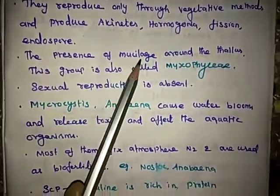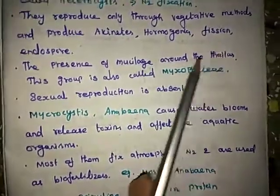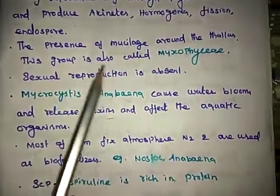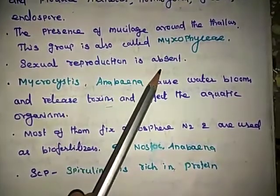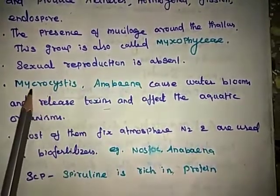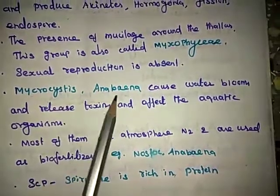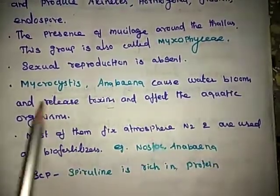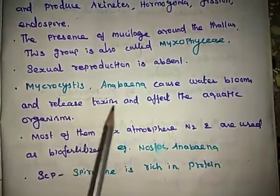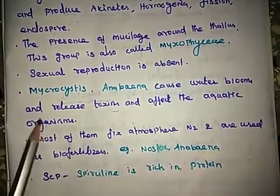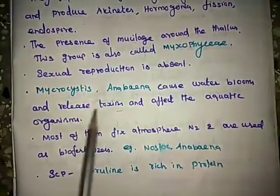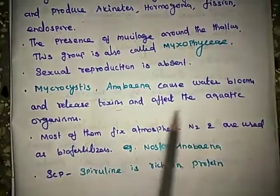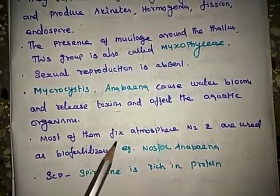The presence of mucilage around the thallus means this group is also called Myxophyceae. Sexual reproduction is absent. Microcystis and Anabaena cause water blooms, releasing toxins that affect aquatic organisms. Most of them fix atmospheric nitrogen and are used as biofertilizers.